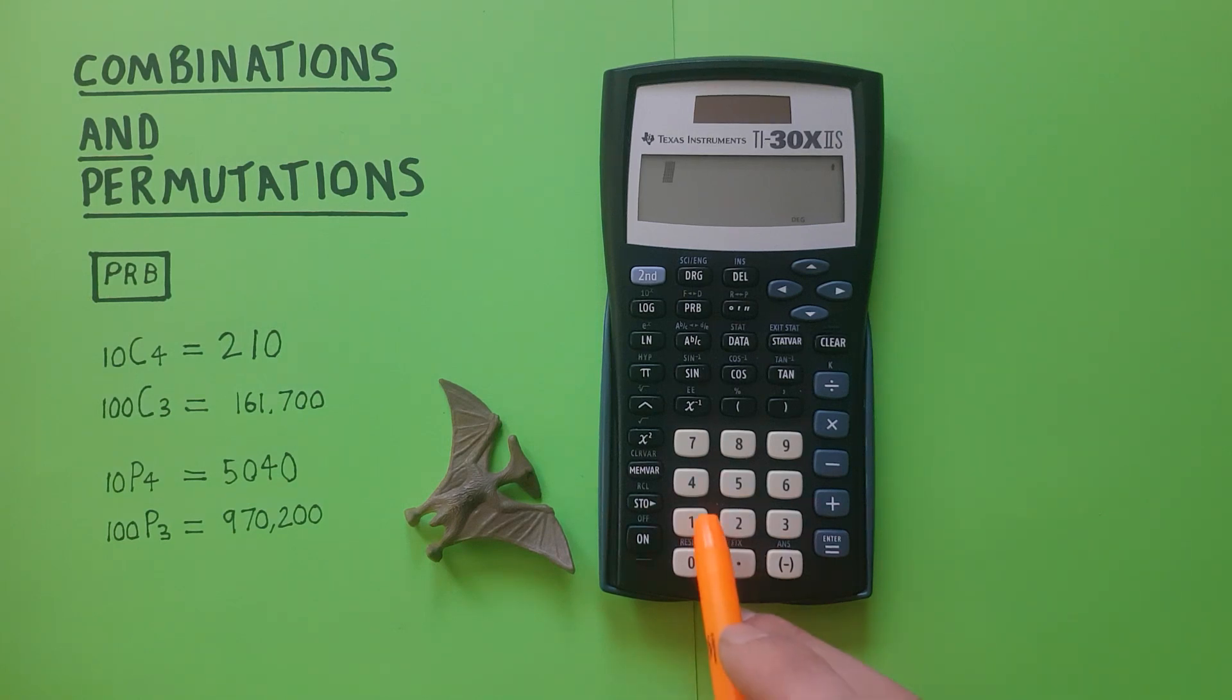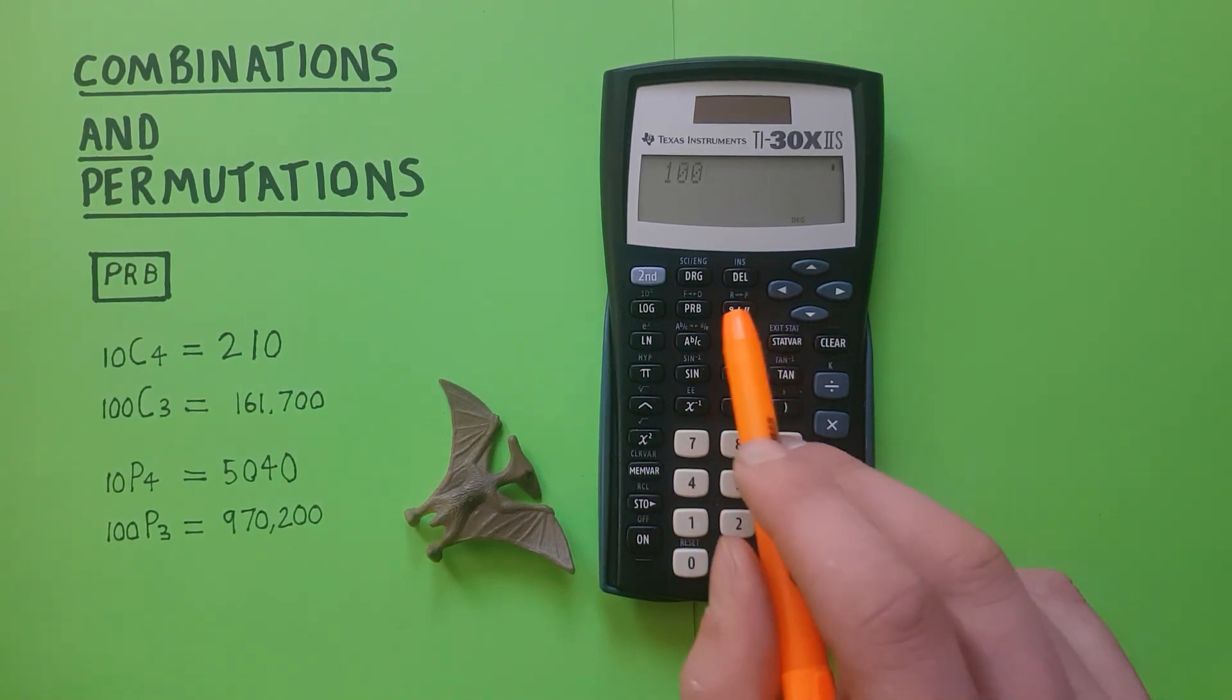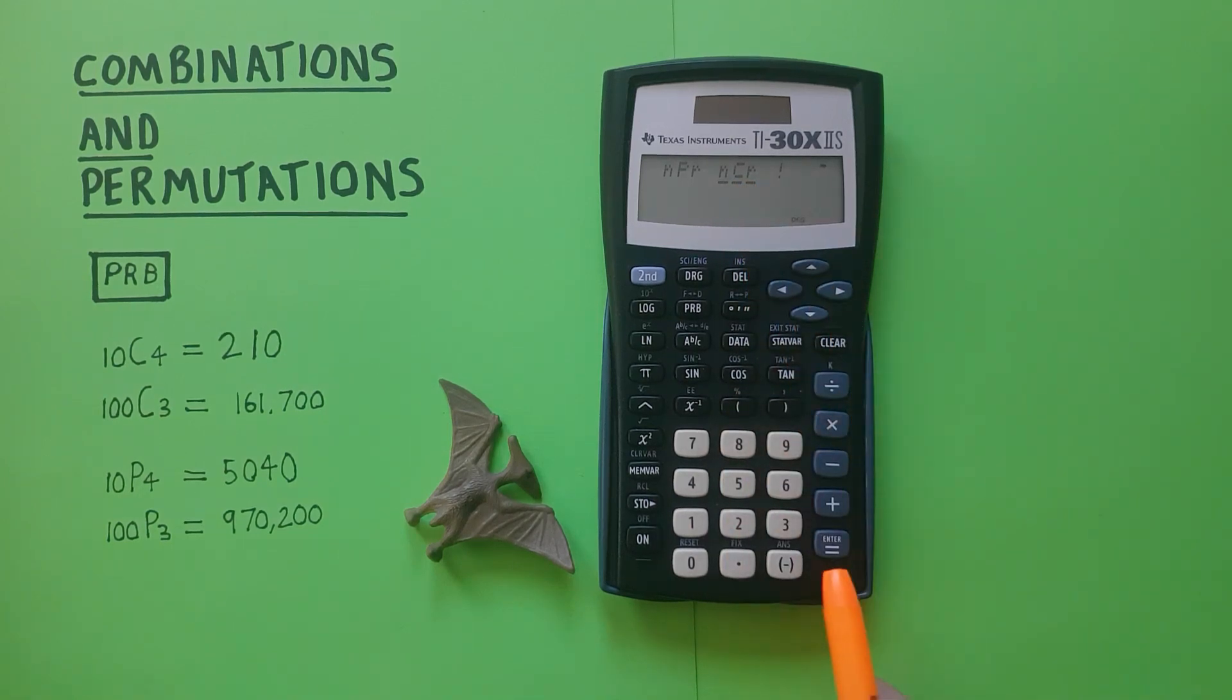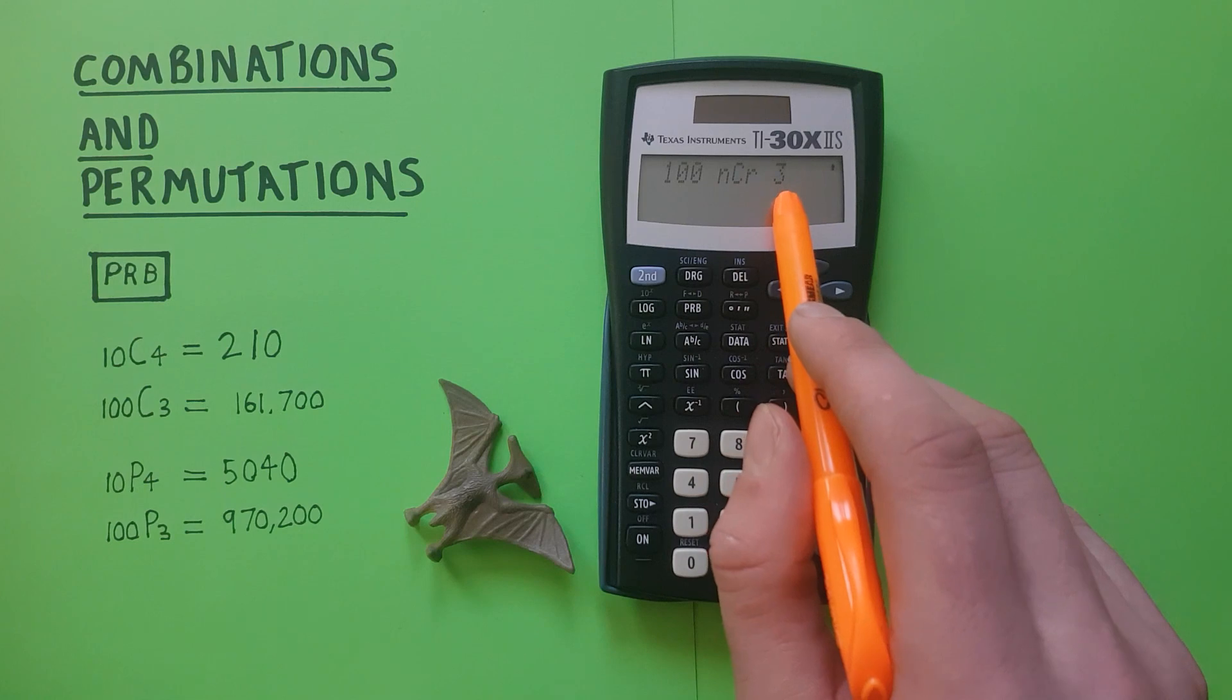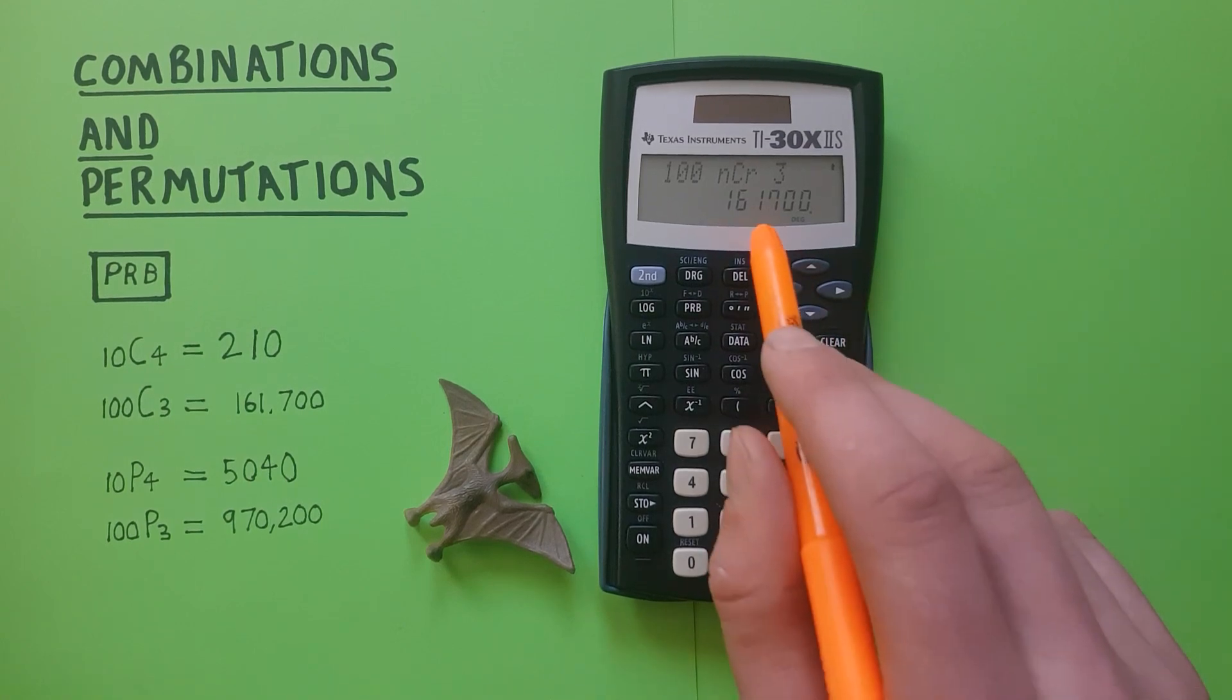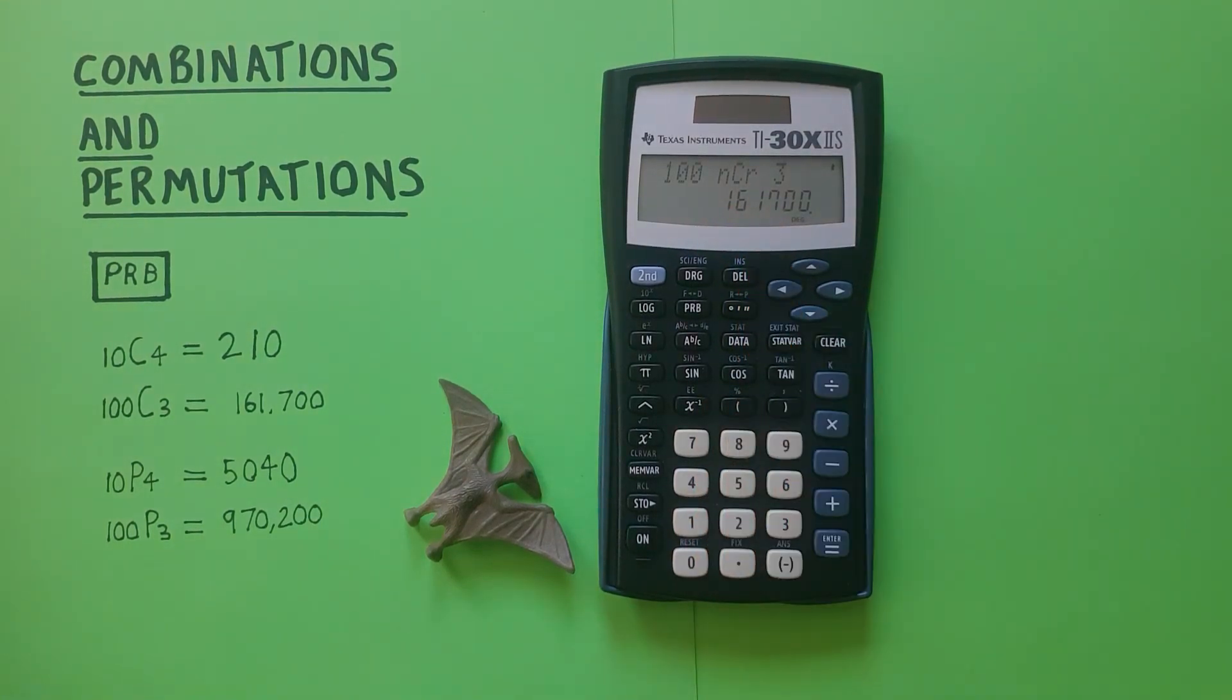Another example, if we place 100 on the screen, press the PRB, go over to NCR, press Enter and 3. So choosing 3 from a set of 100 when the order doesn't matter equals, there we go, there's 161,700 possible ways to do this.